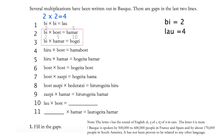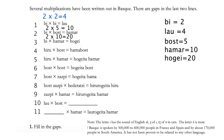If 'hogei' is 10 then 'hamar' must be 5. However, 2 times a whole number 'bost' equals 5 is impossible. So 'hogei' must not be 10. Let's try 20. If 'hogei' is 20 then 'hamar' must be 10. Therefore 'bost' is 5. Until now everything is working. Now the next step confirms that all our assumptions are correct.